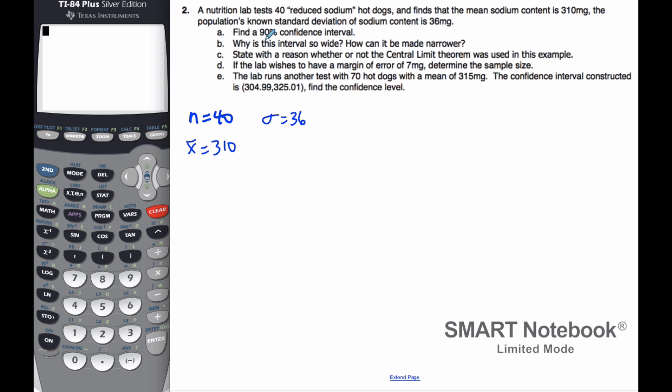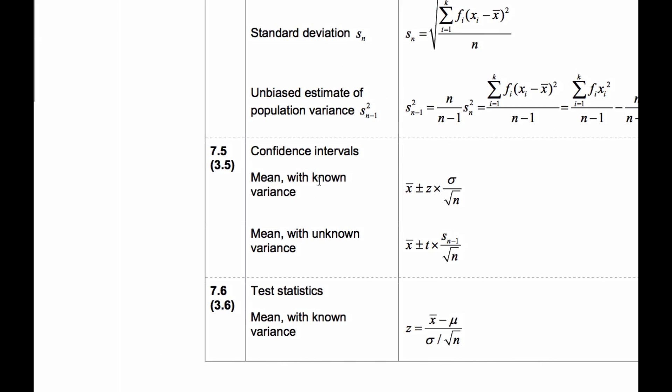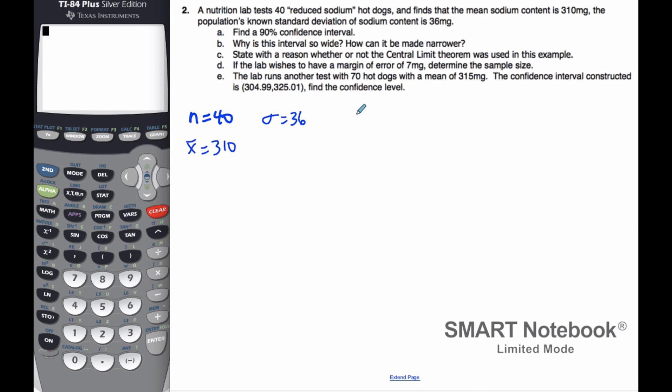So we are asked to find a 90% confidence interval. In order to do it, we'll look at our formula booklet. Here is the formula for our confidence interval. The confidence interval equals x̄ plus or minus Z star times σ over square root of n. So if I want a 90% confidence level, then I need to find Z star for 90%.